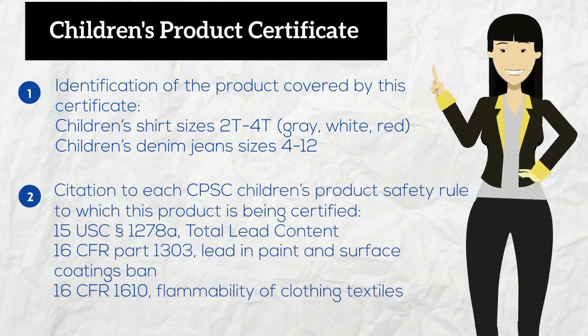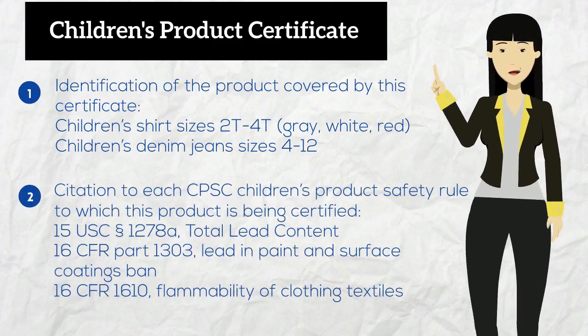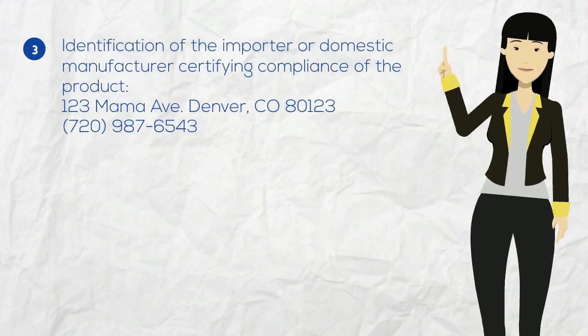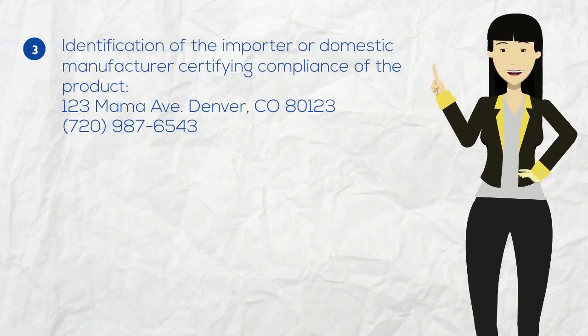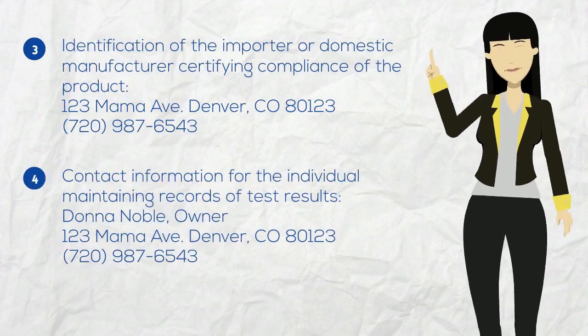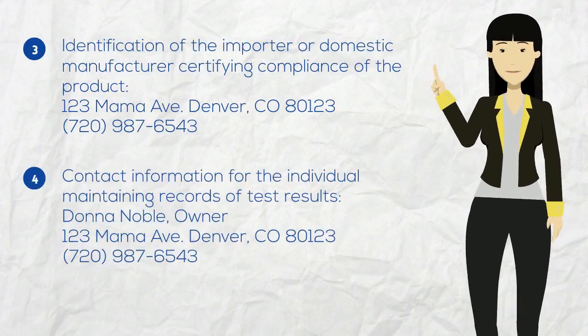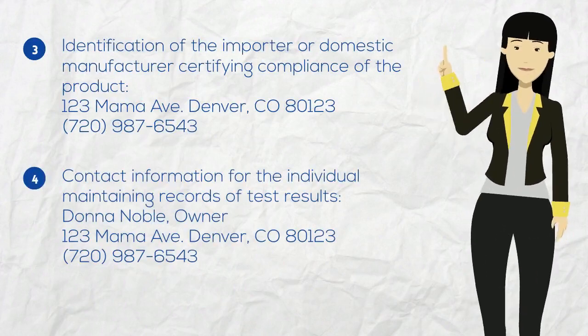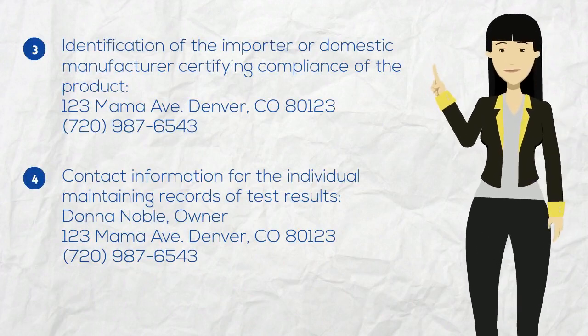In section two, I list the rules applicable to my products, which are total lead content, lead and paint, and flammability of clothing textiles. In section three, I put down my address and phone number, and in section four, my own name, address, and phone number, since I maintain my own records for my small business.